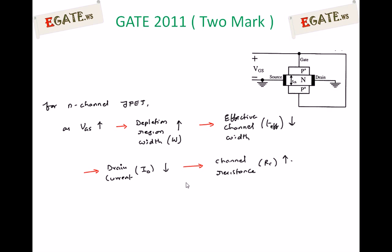Looking at the given diagram: the n-channel JFET is fabricated using an N-type semiconductor. Two P-plus regions are placed into the N-type semiconductor on both sides. These two P-plus regions are connected internally — they are shorted so that whatever voltage is applied at the gate is applied equally across both PN junctions. Current always flows from drain to source through the N-type semiconductor, which acts as the channel.